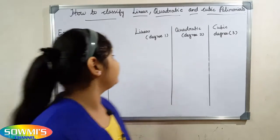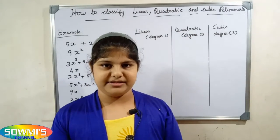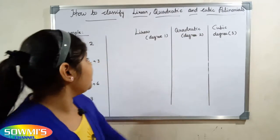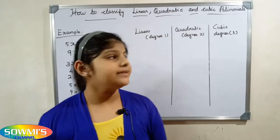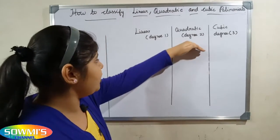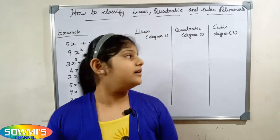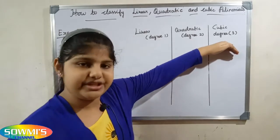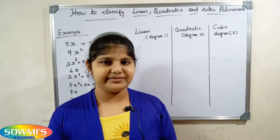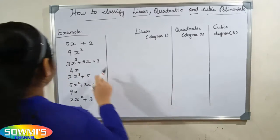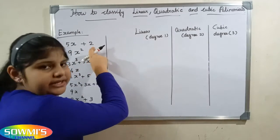Before we classify, we have to know what is meant by linear, quadratic, and cubic polynomials. A polynomial of degree one is called a linear polynomial. A polynomial of degree 2 is called a quadratic polynomial. A polynomial of degree 3 is called a cubic polynomial.